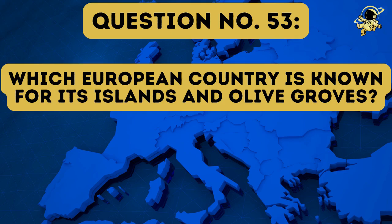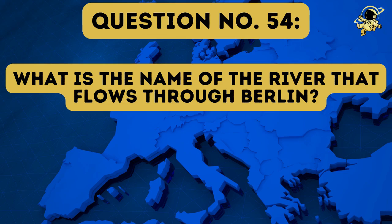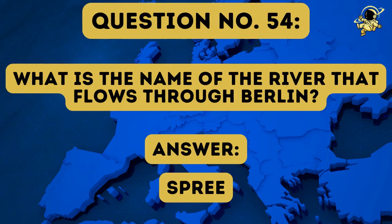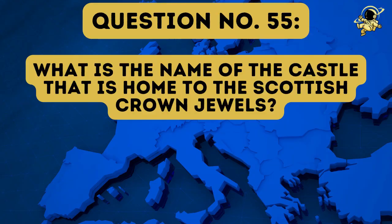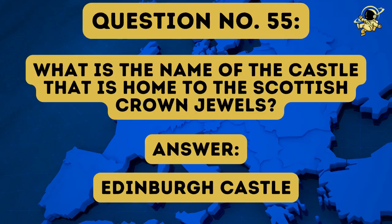Question number fifty-three: Which European country is known for its islands and olive groves? And the answer to question number fifty-three is Greece. Question number fifty-four: What is the name of the river that flows through Berlin? And the answer to question number fifty-four is the Spree. Question number fifty-five: What is the name of the castle that is home to the Scottish crown jewels? And the answer to question number fifty-five is Edinburgh Castle.